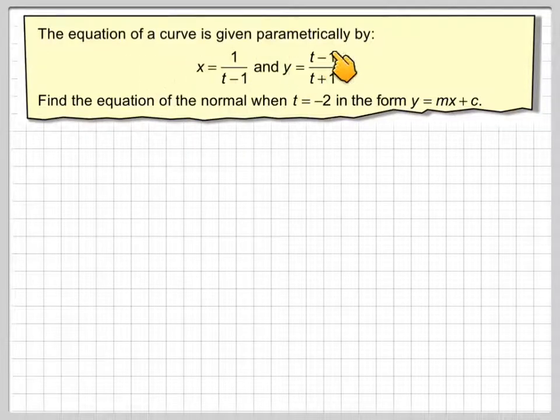The equation of the curve is given parametrically by x equals 1 over t minus 1, and y equals t minus 1 over t plus 1. Find the equation of the normal when t equals minus 2 in the form y equals mx plus c.